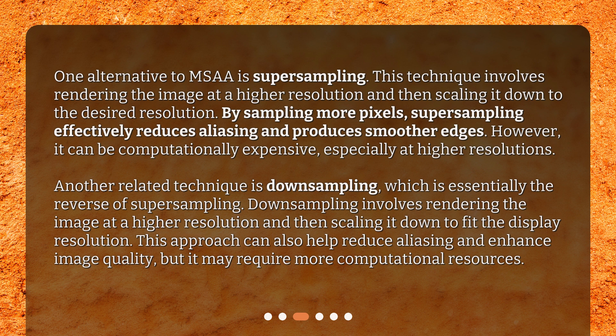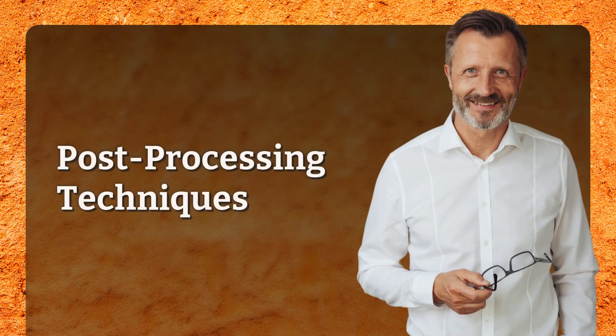Another related technique is down sampling, which is essentially the reverse of super sampling. Down sampling involves rendering the image at a higher resolution and then scaling it down to fit the display resolution. This approach can also help reduce aliasing and enhance image quality, but it may require more computational resources.